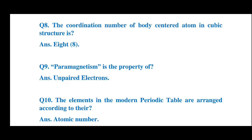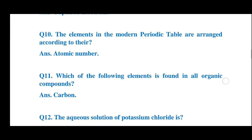Question number 9: Paramagnetism is the property of — what is paramagnetism a property of? The answer is unpaired electrons. Paramagnetism is the property of unpaired electrons. Question number 10: The elements in the modern periodic table are arranged according to their —